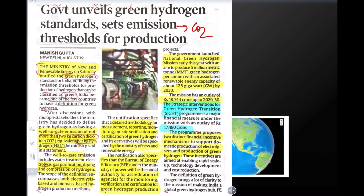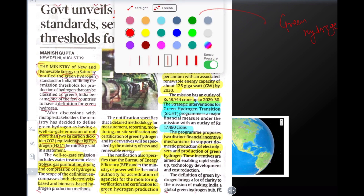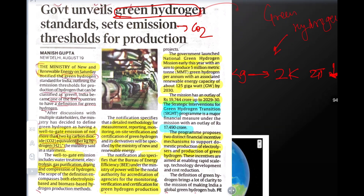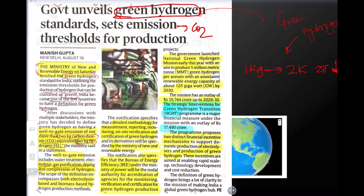First of all, let's understand Green Hydrogen. India is one of the countries which has defined Green Hydrogen. India has explained that when you have 1 kg of hydrogen, if the associated emissions are less than 2 kg CO2, it can be classified as Green Hydrogen.